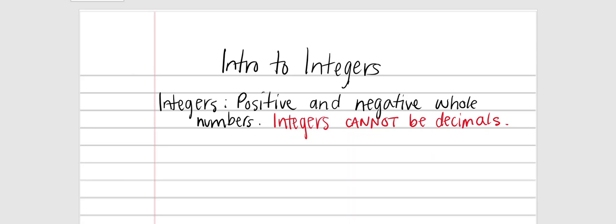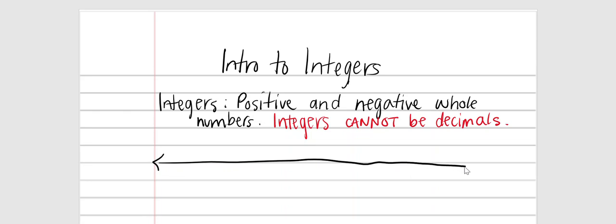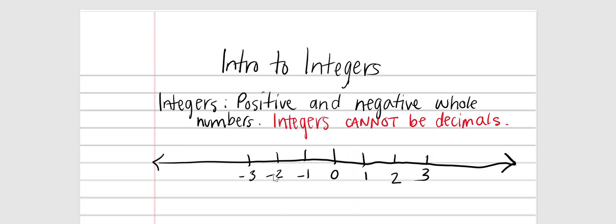Today we're going to talk about the introduction of integers. Anything that I write down on my piece of paper, you write down on your piece of paper. Integers are positive and negative whole numbers — integers cannot be decimals. Create a number line with arrows on each end. Put zero in the middle, positive one to the right, and negative one to the left of zero. Continue with positive two, negative two, positive three, negative three.